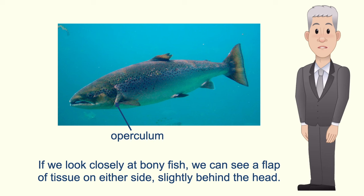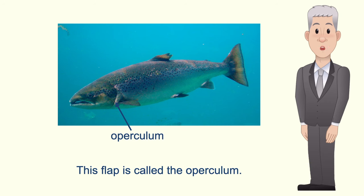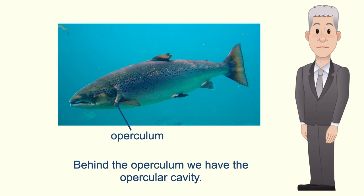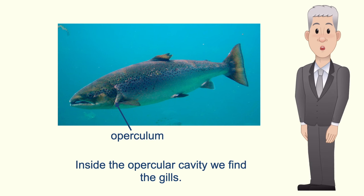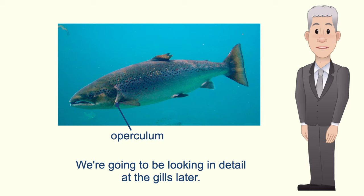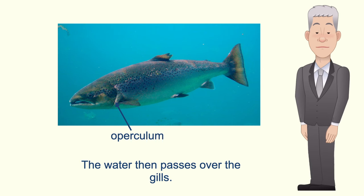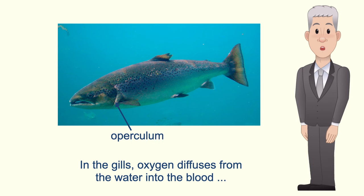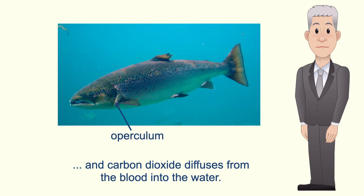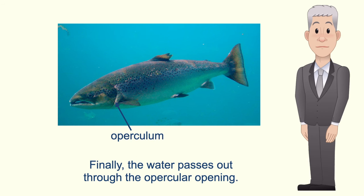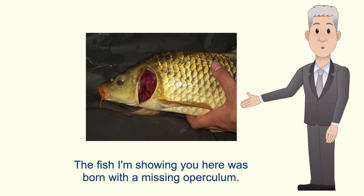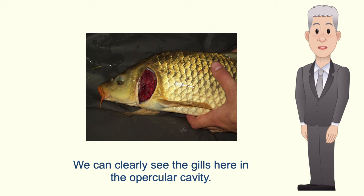If we look closely at bony fish we can see a flap of tissue on either side slightly behind the head. This flap is called the operculum and behind the operculum we have the opercular cavity. Inside the opercular cavity we find the gills. Oxygen rich water enters the fish through the mouth, then passes over the gills. In the gills oxygen diffuses from the water into the blood and carbon dioxide diffuses from the blood into the water. Finally the water passes out through the opercular opening. The fish shown here was born with a missing operculum, so we can clearly see the gills in the opercular cavity.